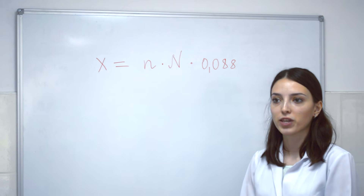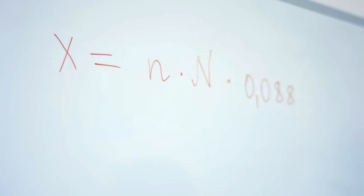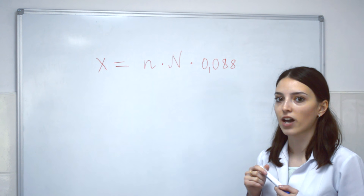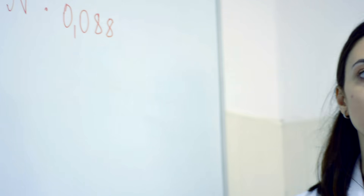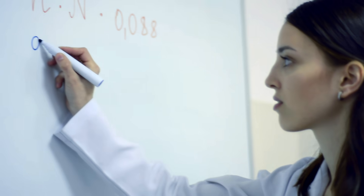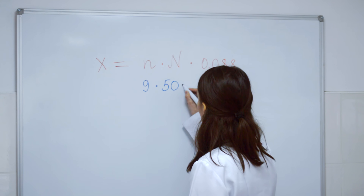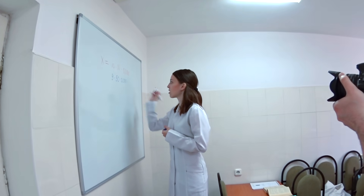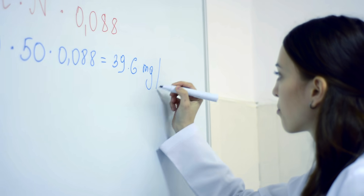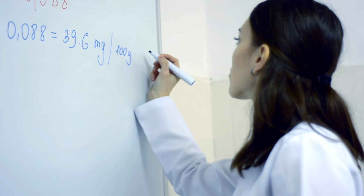Now that we have done the titration, we can proceed to the calculation of the amount of vitamin C using the formula shown on the screen, where n is the amount of Tillman's reagent used for titration, N is the amount of extracted hydrochloric acid solution, and 0.088 is the standard coefficient of Tillman's reagent. Introducing our data: n equals 9, multiplied by 80, multiplied by 0.088, we obtain a result of 39.6 mg per 100 grams of the product.